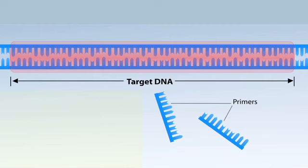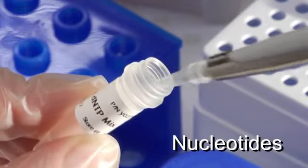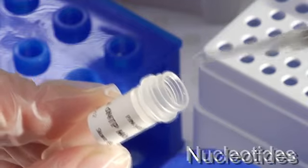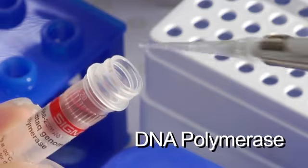Each primer is complementary to each of the different strands of the double-stranded DNA. We take a sample of some nucleotides. We'll add the all-important DNA polymerase. The polymerase enzyme extends the primer with nucleotides to copy the DNA template.